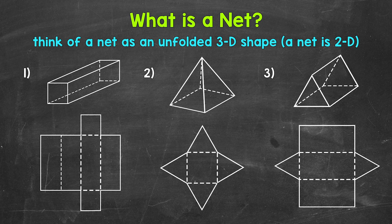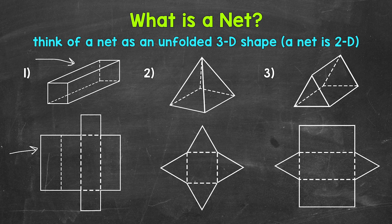Starting with number 1 where we have a rectangular prism. So here is the rectangular prism and then below we have the net of that rectangular prism. If you can imagine folding that net along the dashed lines, it folds into a rectangular prism.